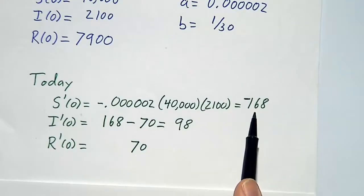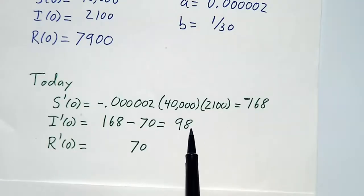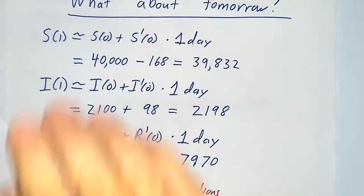So we know that we're losing potentials at a rate of 168 per day, we're gaining actives at a rate of 98 per day, and we're gaining rejecteds at a rate of 70 per day. That's today. What about tomorrow?